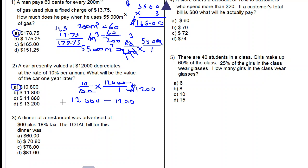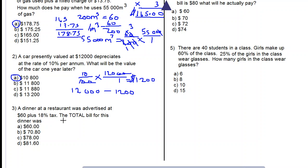Let's look at number three. A dinner at a restaurant was advertised at $60 plus 18% tax. The total bill for this dinner was, so let's find 18% of 60.